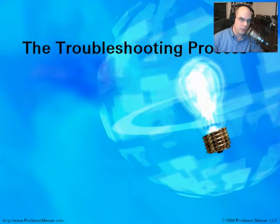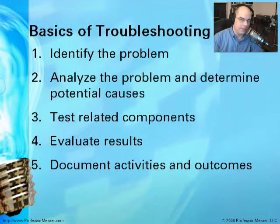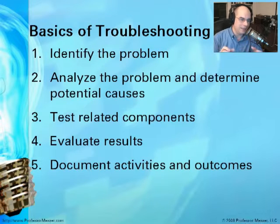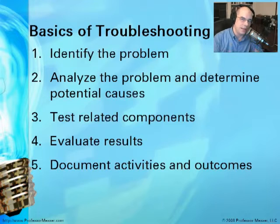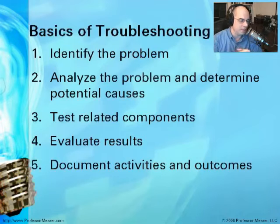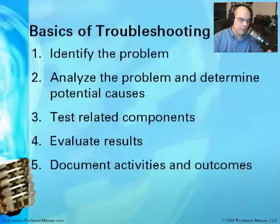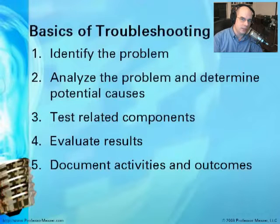These are the five steps CompTIA has laid out for troubleshooting. Step one: identify the problem. Step two: analyze the problem and determine what the causes might be. Step three: start testing the components associated with the problem. Step four: evaluate your results and see if the problem was resolved. Step five, which is often overlooked, is documenting exactly what you did to solve the problem and what the final outcome was.